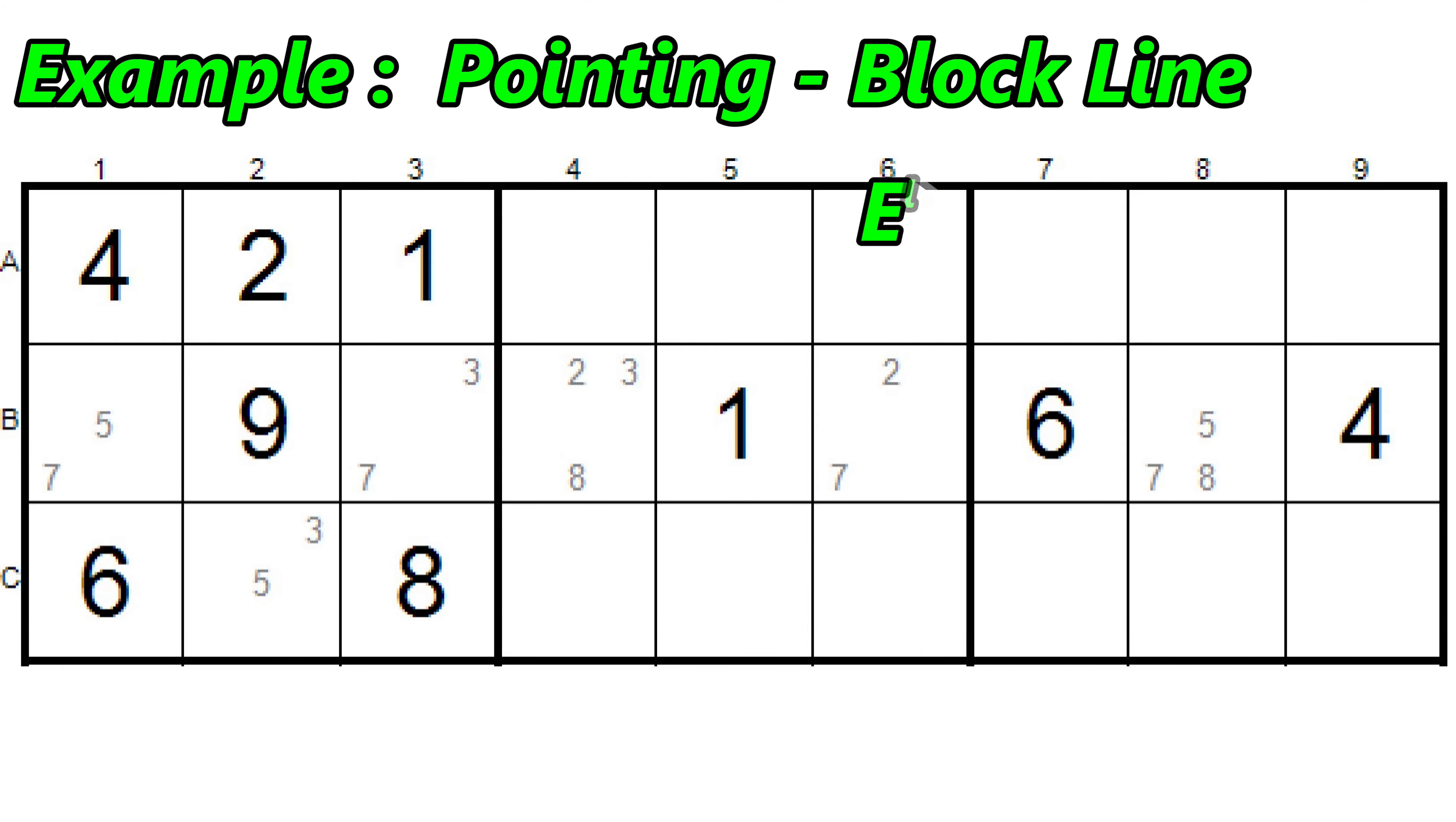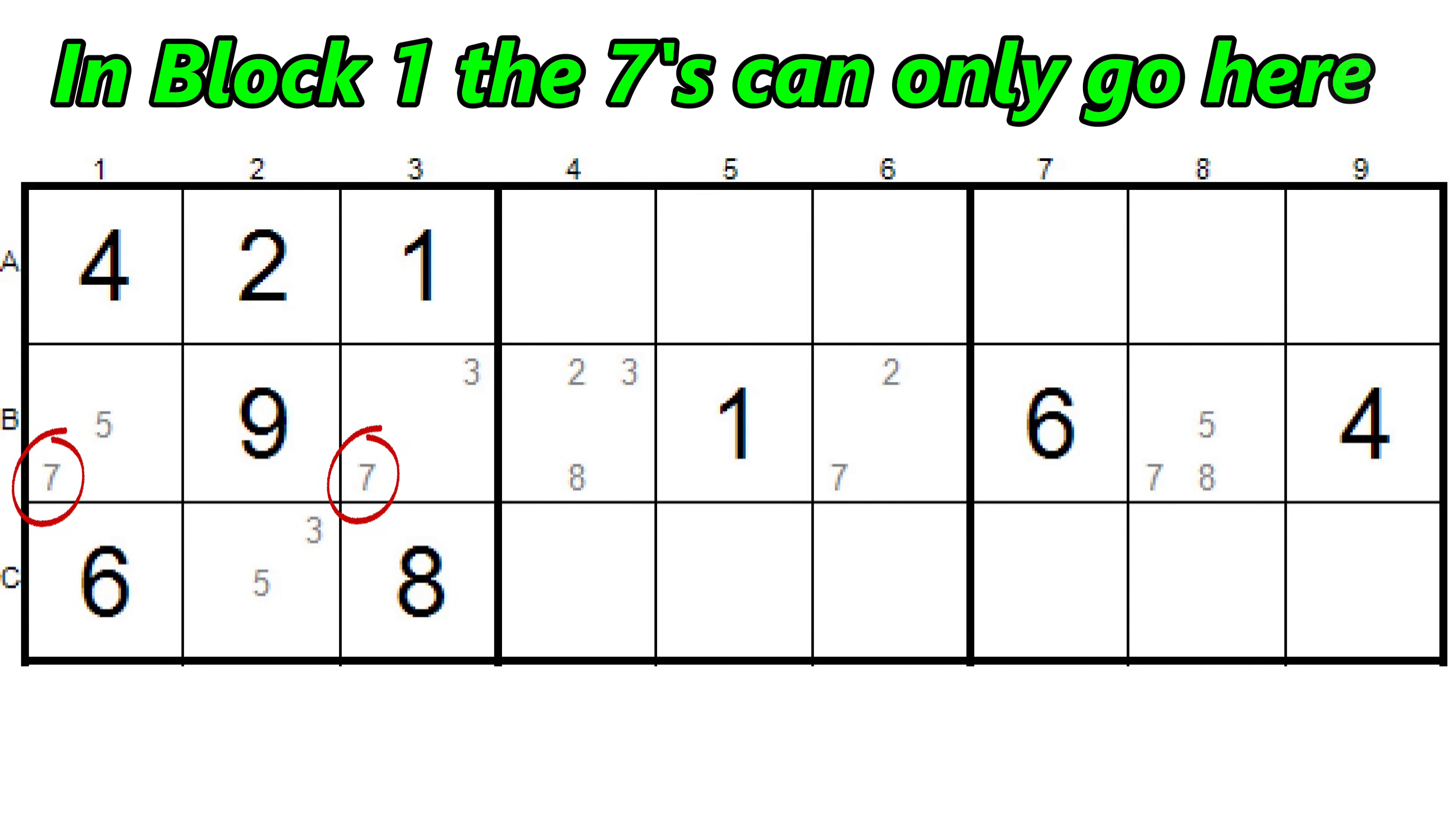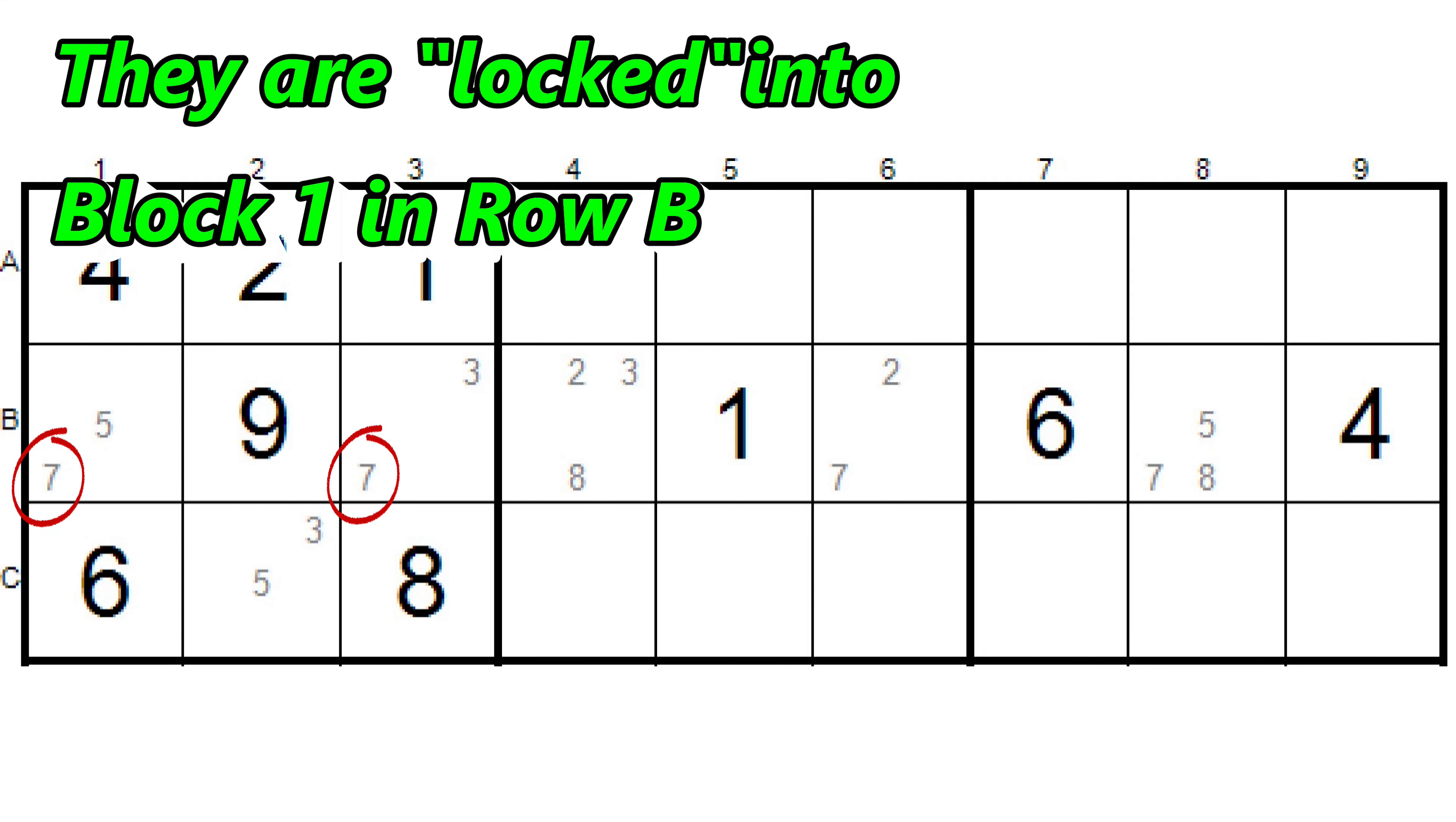Let's have a look at another example of pointing. Here we have block 1 filled in with all the possible candidates and row B is also filled in with all the possible candidates. Now take a closer look at block 1. The 7s are locked into the same line segment, row B, in block 1. They can only be in row B in that particular block, block 1.